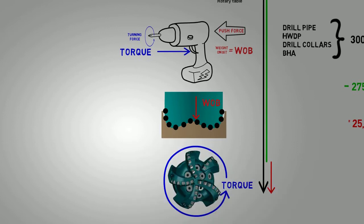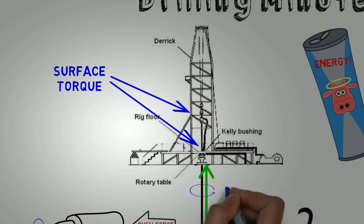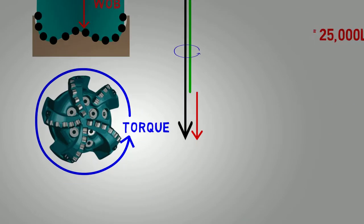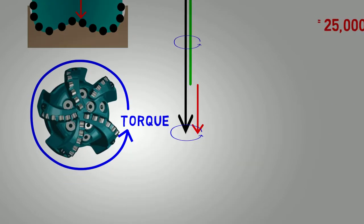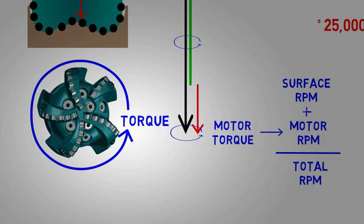Torque is provided by the rig on surface by the top driver or Kelly, depending on the type of rig. Surface torque is used to turn the entire drill string. In many wells, a downhole motor is also used, which converts the energy and the fluid flow into torque to turn the bit. Whether at the surface or at the bit, torque is what generates RPMs.